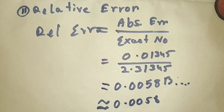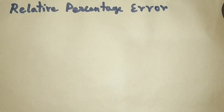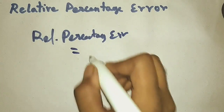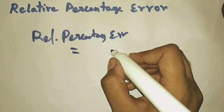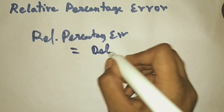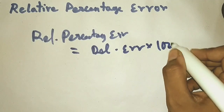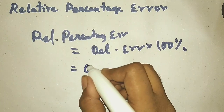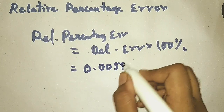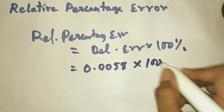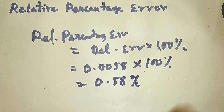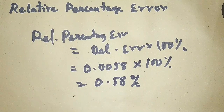Now what is the relative percentage error? Just multiply the relative error by 100. According to our problem, the relative error was 0.0058; multiply it by 100. This is just a standard form of error used for comparing errors. According to our problem, the relative percentage error is 0.58 percent.